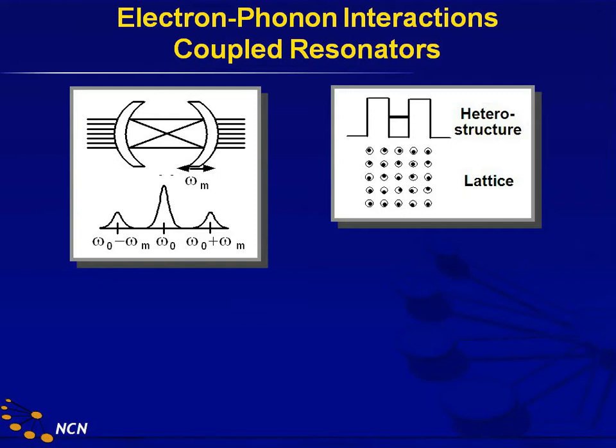What you have in semiconductor devices, especially in polar semiconductors like gallium arsenide, is a crystal lattice underneath that likes to rattle at certain frequencies. That can be a coupled oscillator problem. If there are discrete frequencies of these vibrational modes in the crystal, they can impose sidebands.